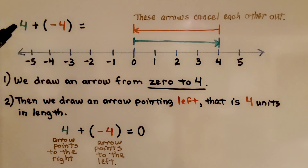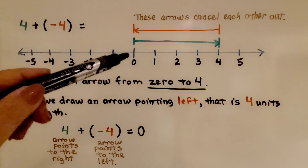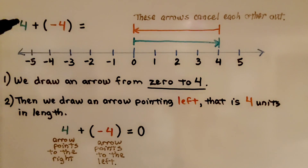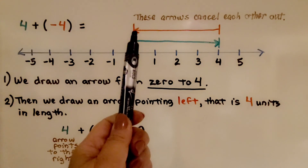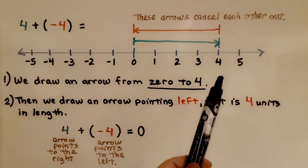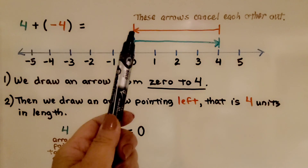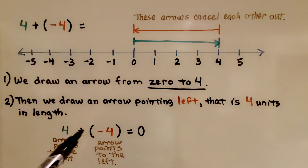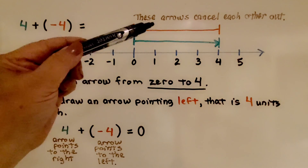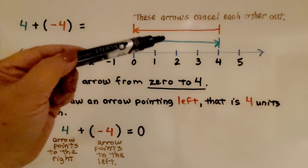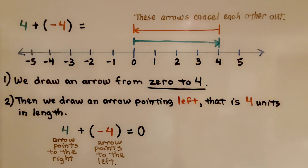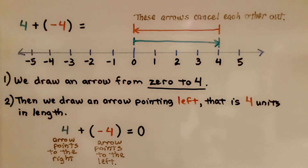Now we have positive 4 plus negative 4. We draw an arrow from 0 to positive 4, then draw an arrow pointing to the left that is 4 units in length. We go 1, 2, 3, 4 units towards the negative side of the number line. That puts us at 0. The arrows cancel each other out completely. So 4 plus negative 4 is equal to 0. For positive 4 the arrow points right; for negative 4 the arrow points left.